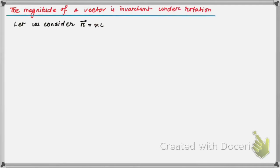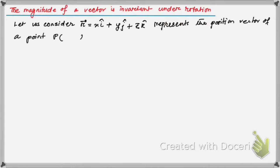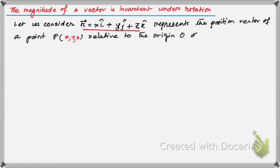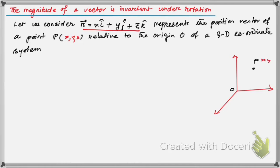Let us consider position vector r, given by x i-cap + y j-cap + z k-cap, which represents the position vector of a point P(x, y, z) in a 3D coordinate system. This position vector is relative to an origin O of a 3D coordinate system. Here is the coordinate system with point (x, y, z) and the y-axis, z-axis, and x-axis shown.